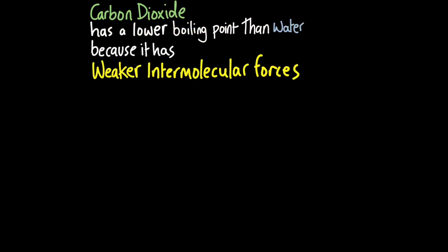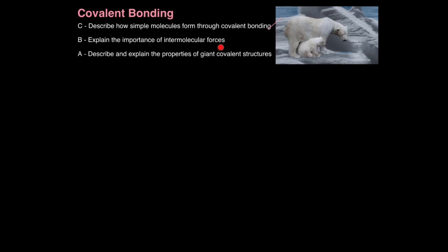Intermolecular forces determine a chemical's boiling point — the stronger the intermolecular forces, the higher the boiling point. Carbon dioxide has a lower boiling point than water because it has weaker intermolecular forces. One critical error students make is using the term 'intermolecular forces' to describe the boiling points of ionic compounds and giant covalent structures — these are not molecules, so you cannot say intermolecular forces. Only use it for simple covalent molecules.